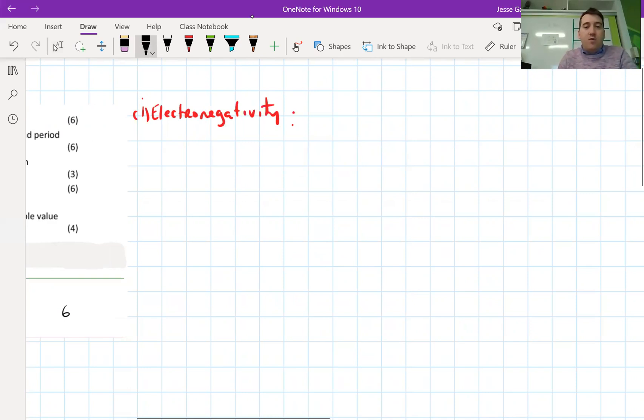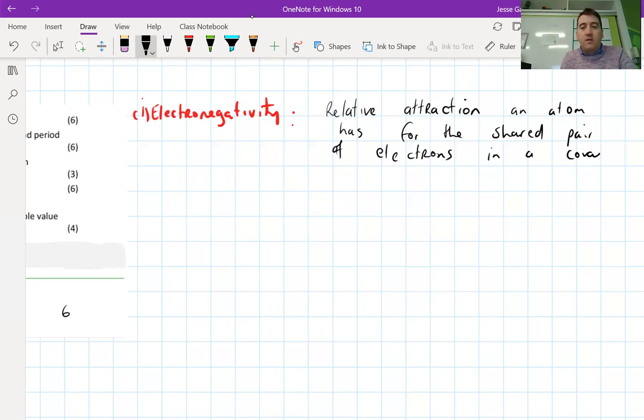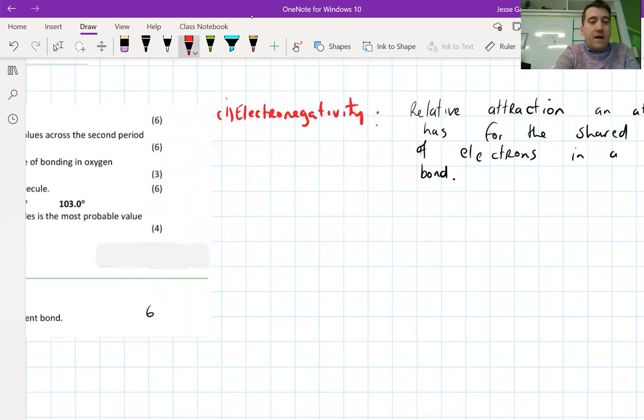All right, so what you should have said is pretty straightforward. It's always the same every year what they'll accept for this. It's the relative attraction. So if you've got two atoms in a bond, it's the relative attraction. Each one of them is going to be attracted differently towards the electrons in the bond, so it's the relative attraction an atom has for the shared pair of electrons in a covalent bond. I would suggest if you have never seen that before, you're not ready to do this question yet. You need to go and watch some of the videos about chemical bonding.